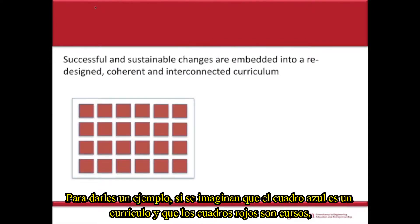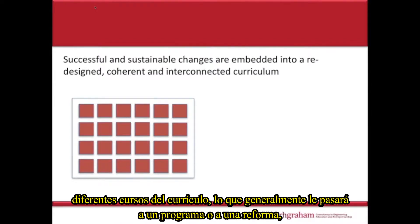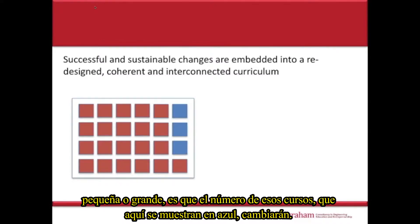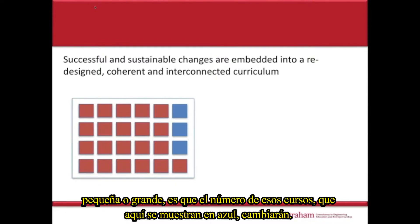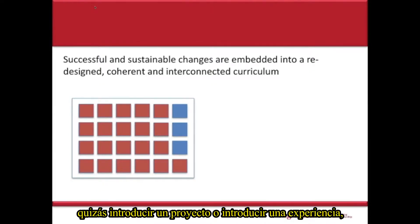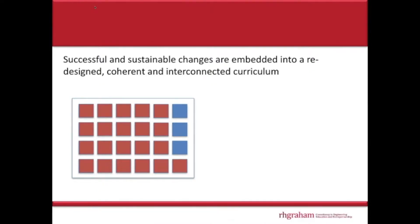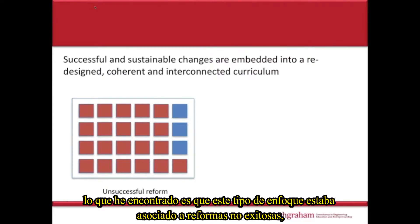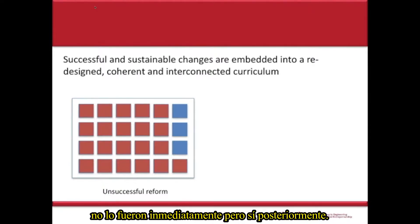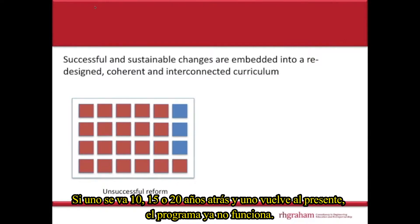Just to give you an example: imagine the blue square is a curriculum and the red squares within it are courses — different courses in a curriculum. Very often what will happen in a program of reform, small or large, is that a number of those courses will be changed. A faculty member will make some quite radical changes to their courses, perhaps introduce a project or introduce an experience. What I found was that approach was almost always associated with unsuccessful reform — it may not fail immediately, but 10, 15, 20 years down the line, very often that program will no longer be operational.